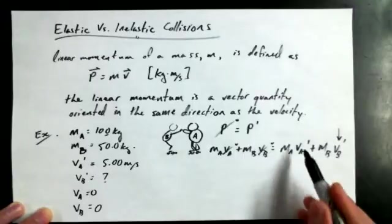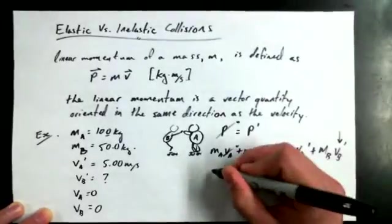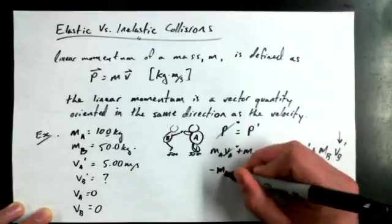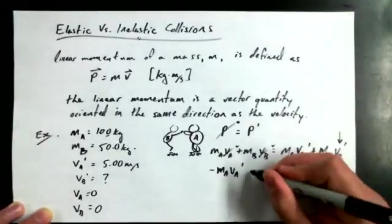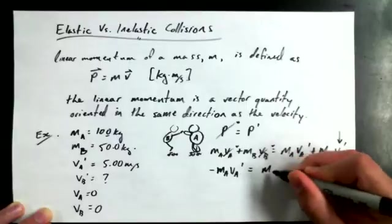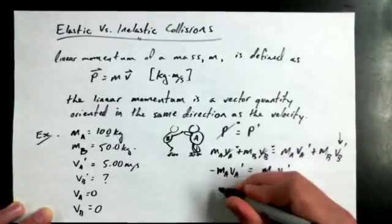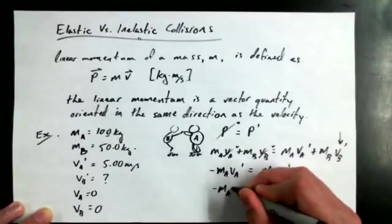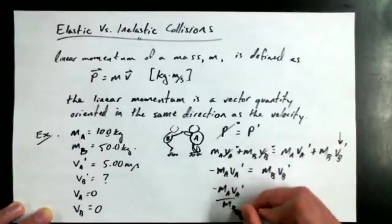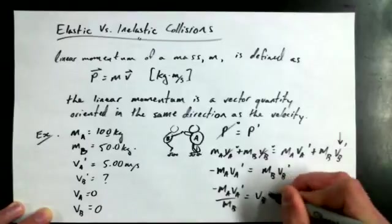So we're going to isolate for that. I'm going to take M A V A primed over to the other side. Negative M A V A primed. I always like to do this algebraically rather than subbing in values first. M B V B primed. Dividing both sides by M B, I would get negative M A V A primed over M B equals V B primed.